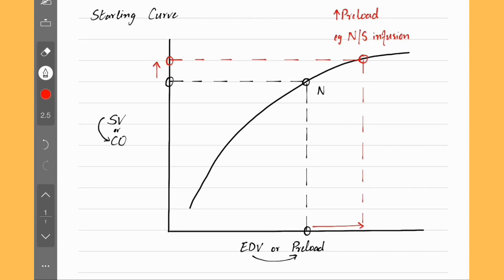Similarly, if we decrease preload, we decrease the cardiac output. We decrease preload by dilating the veins, for example using nitroglycerin.